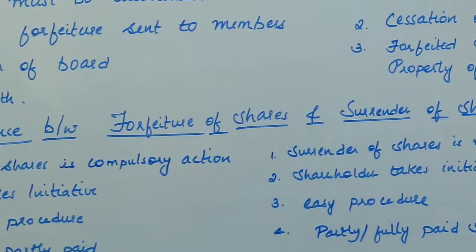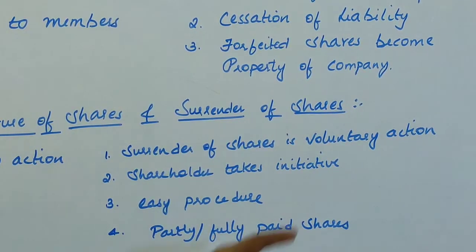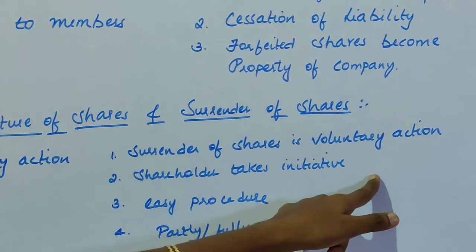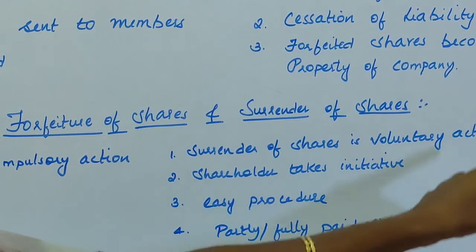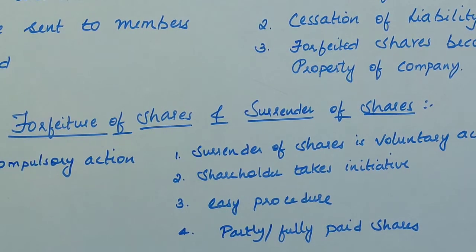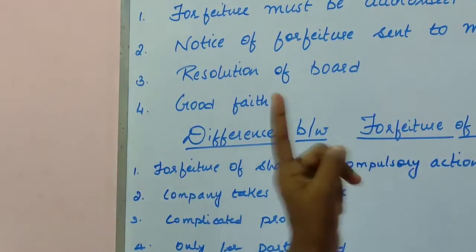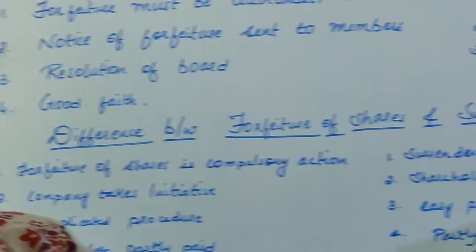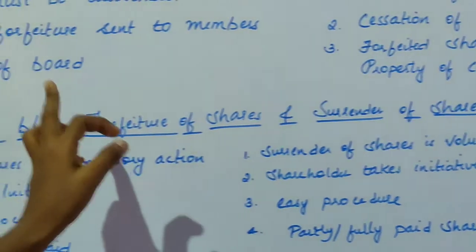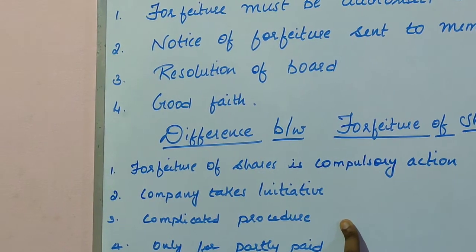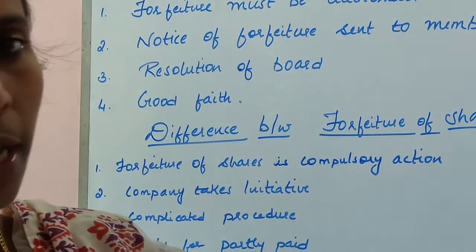Surrender is a voluntary action taken by the shareholder in order to prevent forfeiture or to exchange old shares for new shares. The second point of difference is that forfeiture is initiated by the company, whereas in surrender the shareholder takes the initiative. The third difference is that forfeiture of shares is a complicated procedure requiring many documents, whereas surrender of shares is an easy procedure.